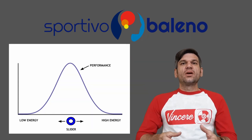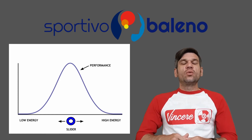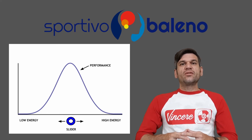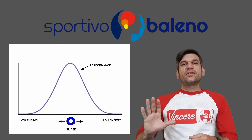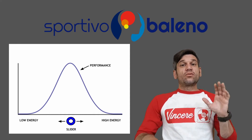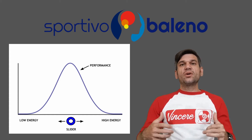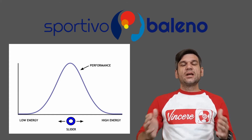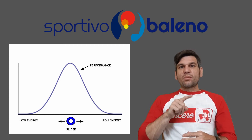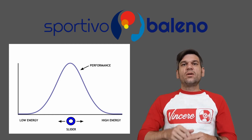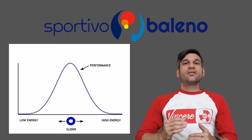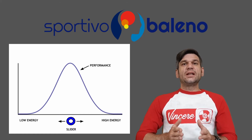We're going to begin with what we'll call an energy level graph, and we'll use a bell curve because many of us are familiar with that. On the far left-hand side is very low energy — practically you're asleep. On the right-hand side is very high energy, amped up to the max. In the middle is somewhere in between. The top part of the bell curve represents your performance.